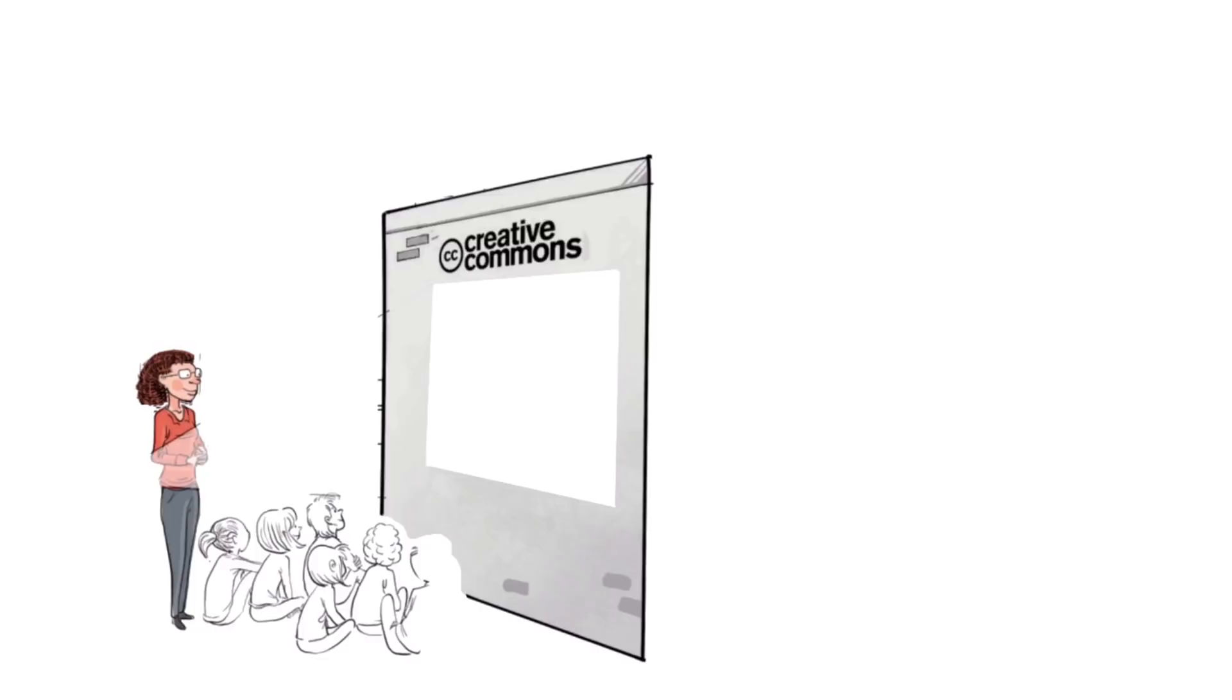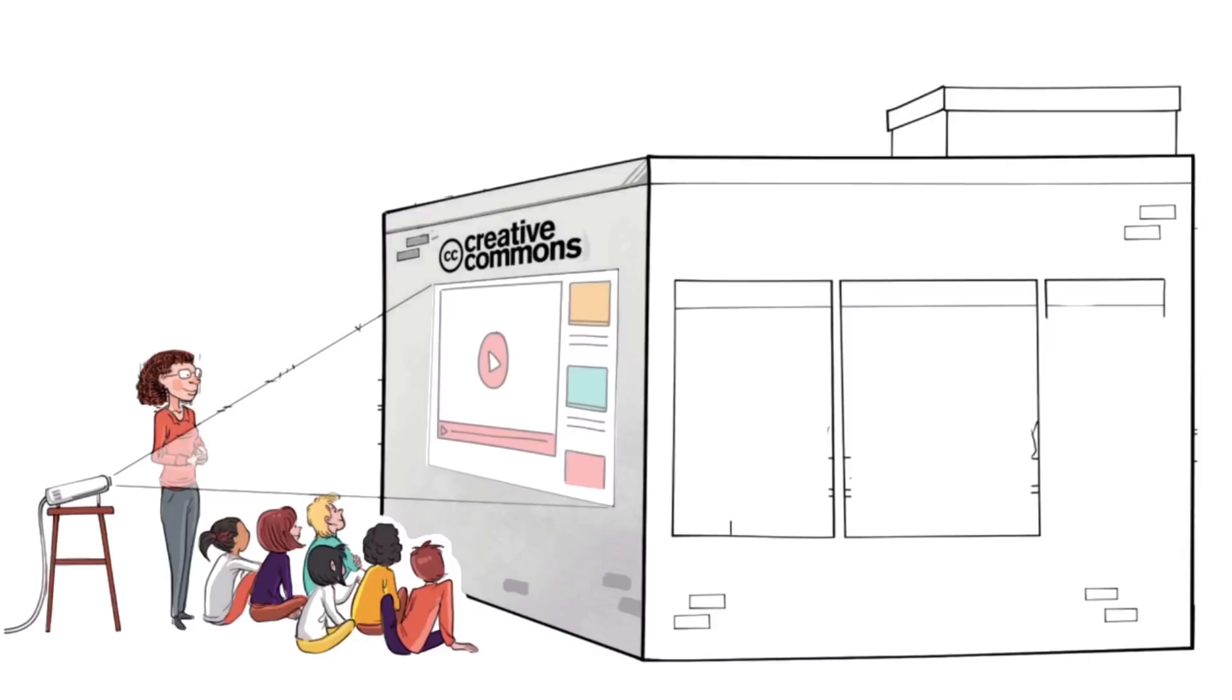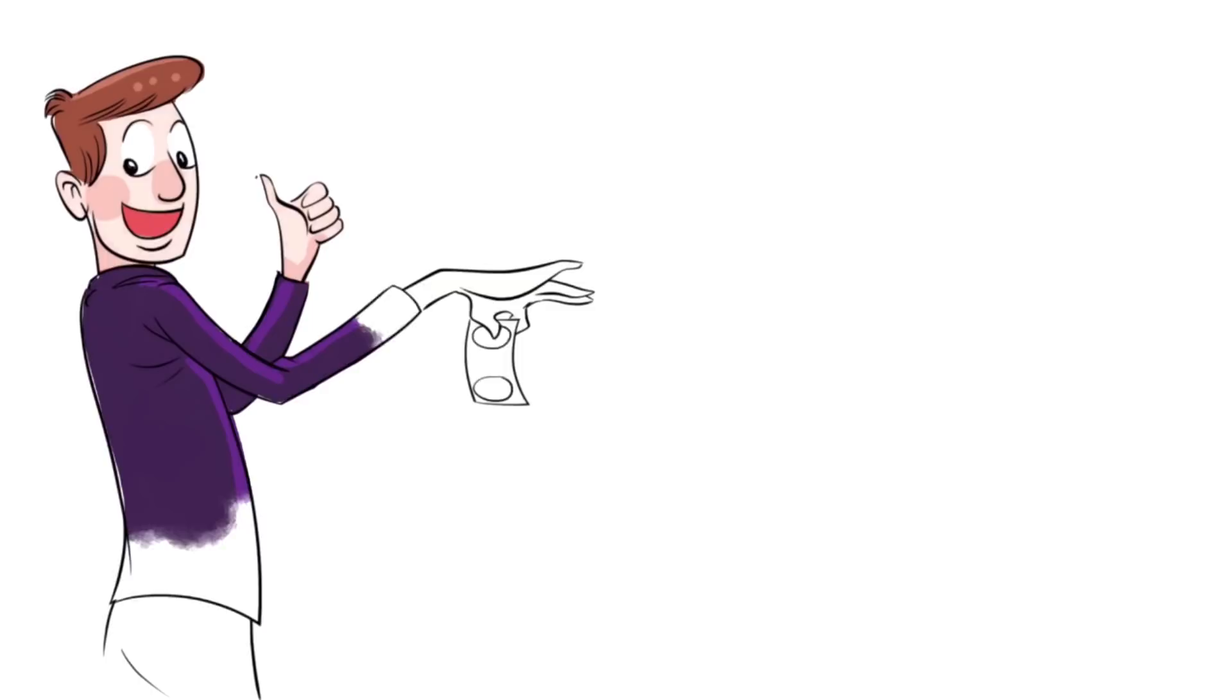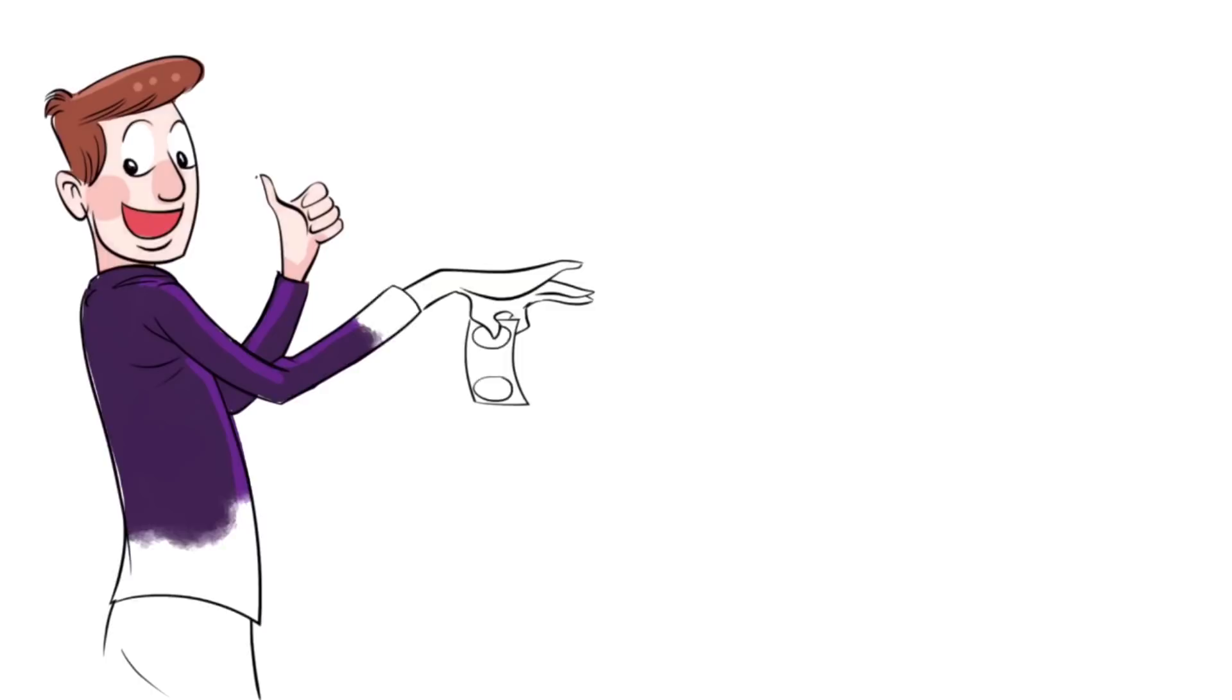Sprouts videos are published under the Creative Commons license. That means our videos are free and anyone can download, edit, and play them for personal use. And public schools, governments, and non-profit organizations can also use them for training, online courses, or designing new curriculums. To help us stay independent and support our work, you can join our patrons and contribute. Just visit patreon.com slash sprouts. Even $1 can make a difference.